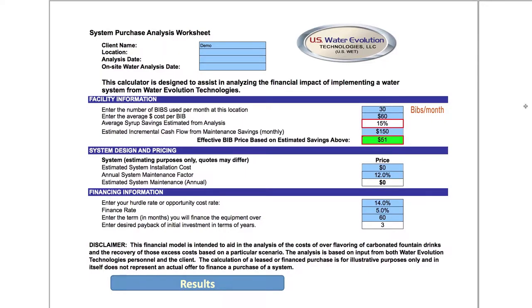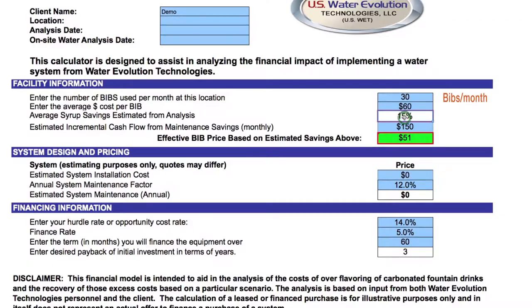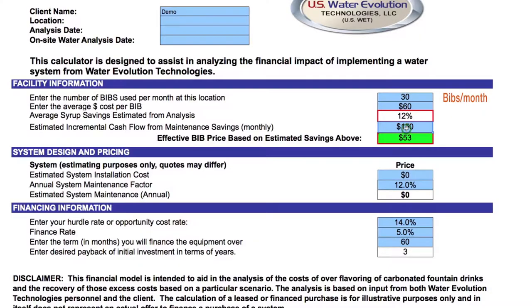We don't know what you pay for bibs, but in this example we're going to use $60. We have saved people greater than 15 or 20 percent, but we're going to be conservative and just use 12 percent here. Virtually every convenience store that we've ever analyzed has had a greater than $200 a month hard water expense, so we're going to put in $200.